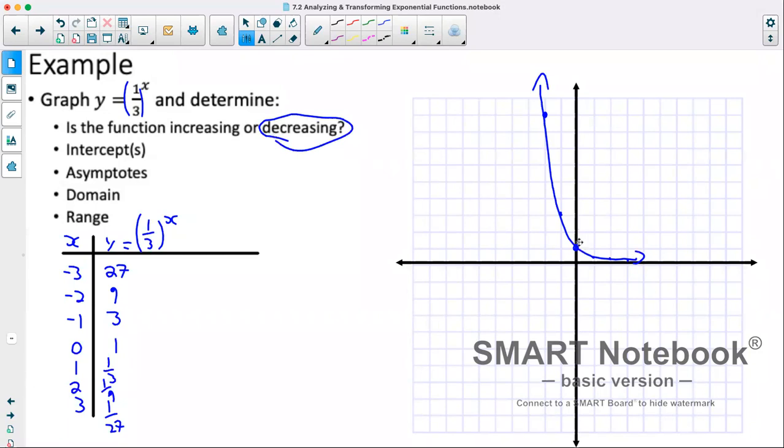So we know that it is decreasing. Intercepts, we just have a y-intercept here. So we have an intercept at y equals 1. Asymptotes, we have a horizontal asymptote here. So that would be at y equals 0. Our domain, it'll continue forever this way and forever this way. So that's x is all real numbers.